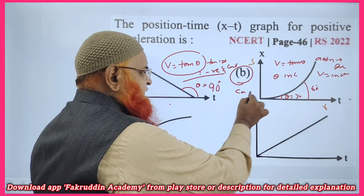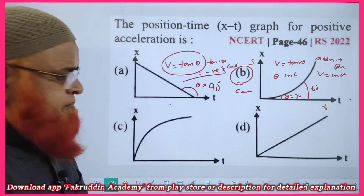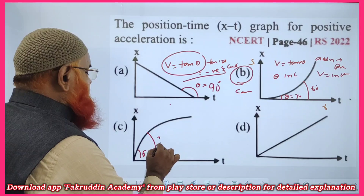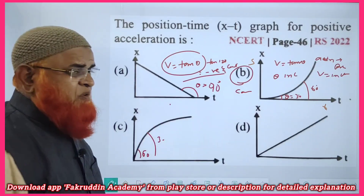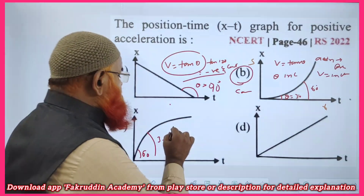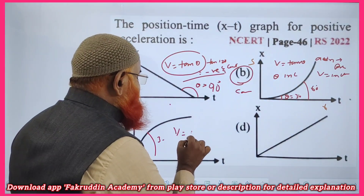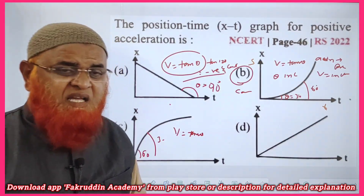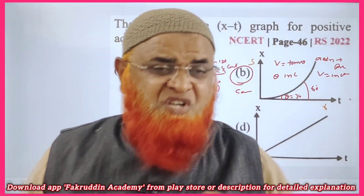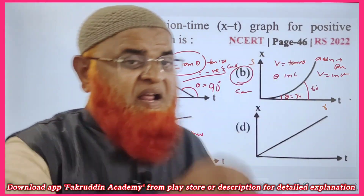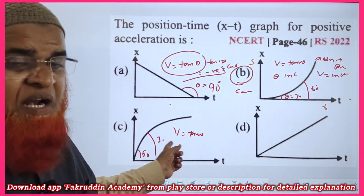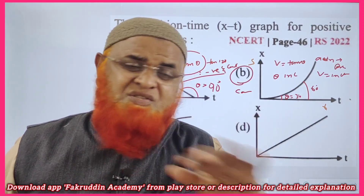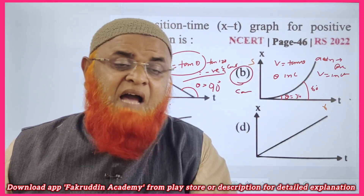Now let us see what happens for graph C. At one place theta is 60 degrees; at another place it is 30 degrees. That means this graph represents a decrease in velocity. Since velocity equals tan theta and theta is decreasing, velocity is also decreasing — like a train approaching the station. Velocity decreases means it is having a deceleration.